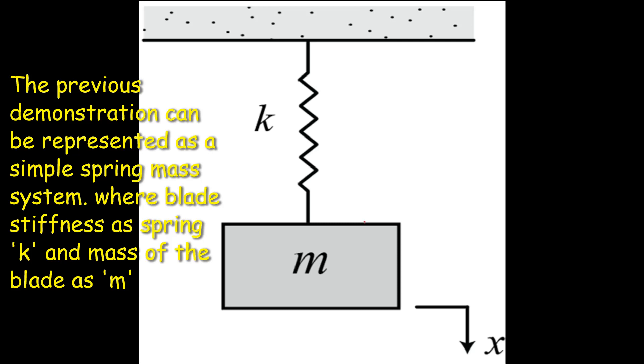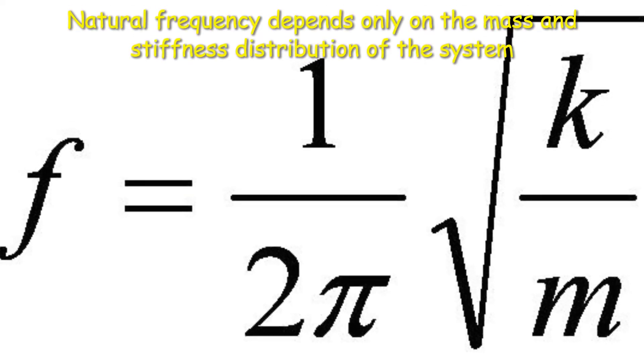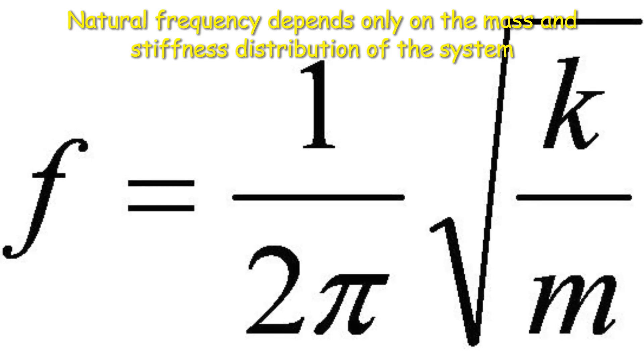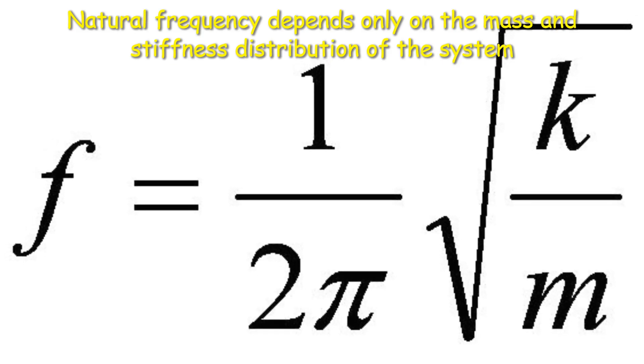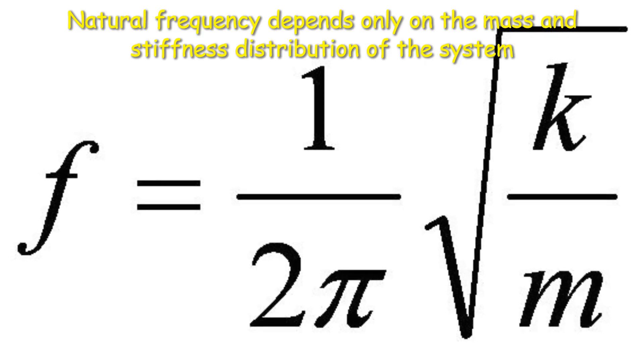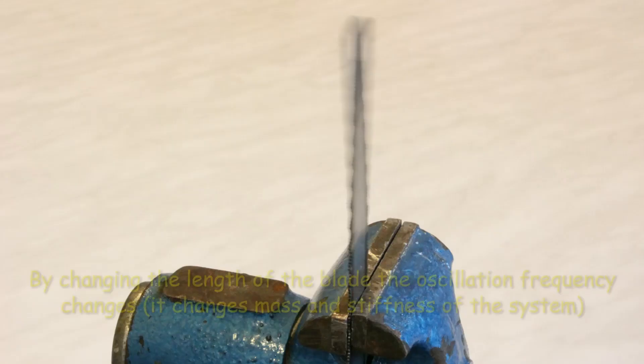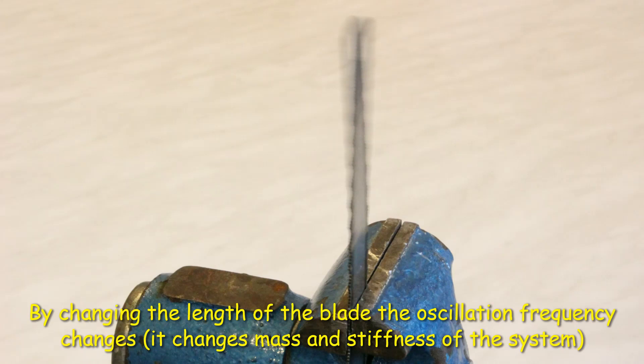The natural frequency depends only on the mass and stiffness distribution of the system, and mathematically it is expressed as shown here. In this demonstration, one can observe by changing the length of the blade, the oscillation frequency changes.